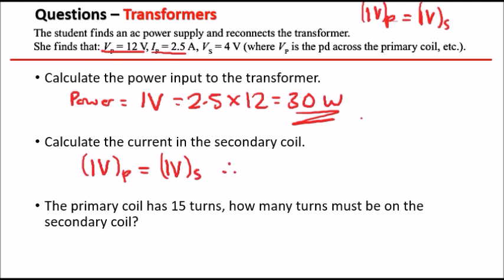This means that we're going to have a type of equation where we just substitute values in. So what do you know about the IP and the VP? So the current for the primary is 2.5 times, and the voltage in the potential difference is 12. So we know that this is 30 automatically.